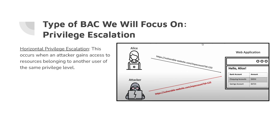The types of broken access control we focus on is privilege escalation, and there are two types. The first is horizontal privilege escalation, which occurs when an attacker gains access to resources belonging to another user of the same privilege level. For example, Alice and an attacker both have a bank account. A URL gives Alice access with her account ID of 123. If an attacker modifies that URL and brute-forces different numbers, they can access everyone's accounts just by changing those last few digits — something that can be done extremely quickly with an algorithm, putting many people at risk.